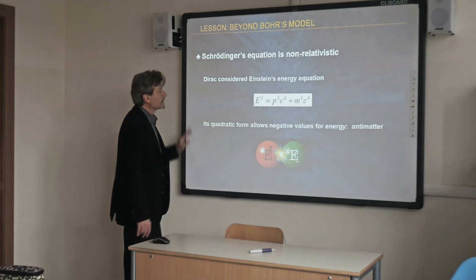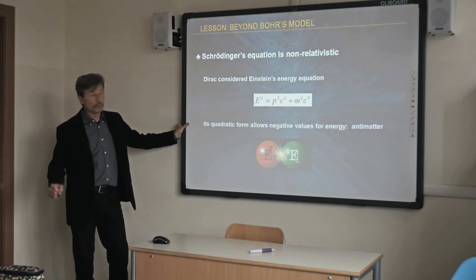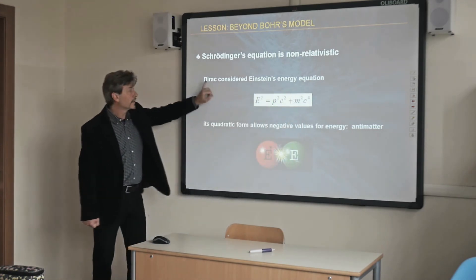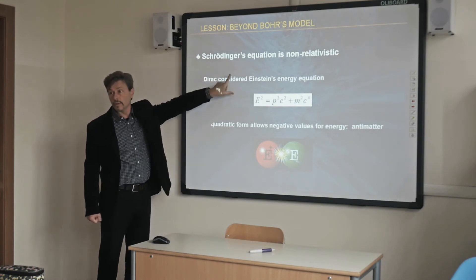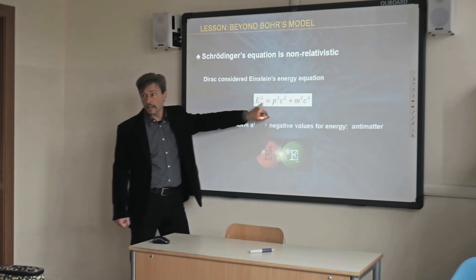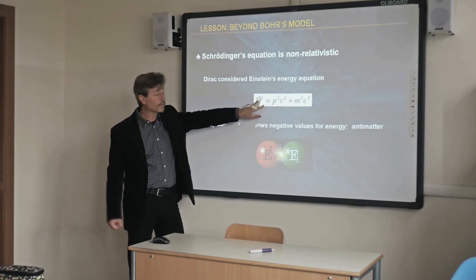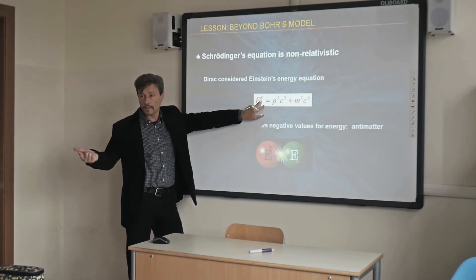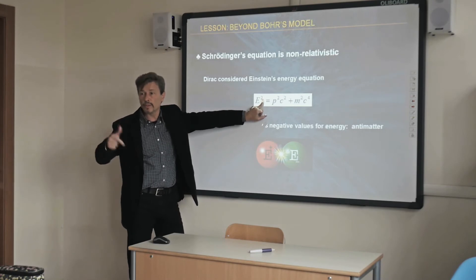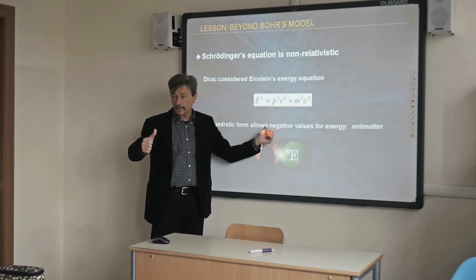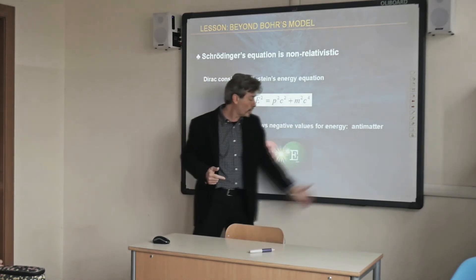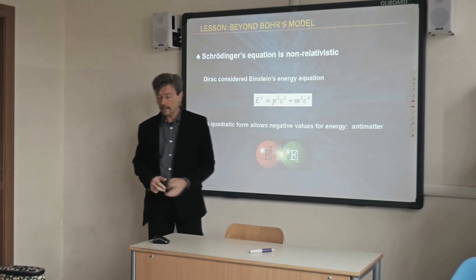Schrödinger did not use Einstein's relativistic theory. Another physicist, Dirac, introduced relativity into Schrödinger's model. We know from special relativity that energy is a quadratic expression, and every quadratic equation has two solutions — one positive and one negative. In physics, this means we have matter and something different from matter. Starting from Dirac, we call this anti-matter. So we have E-positive and E-negative: matter and anti-matter.